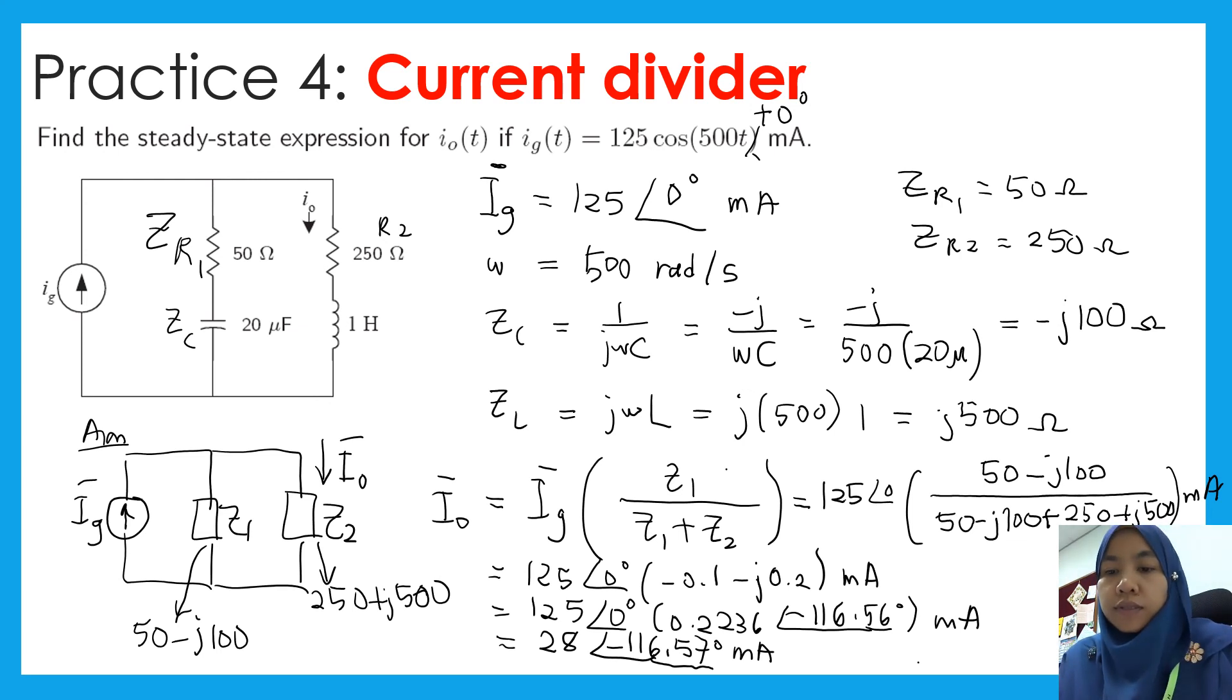And bear in mind, all the units here are in milliamps. Please use the steady state expression. So what is i node? i node should be in a small letter. And we express back to T, the function of T. And this is 28, what is the cosine? And then omega angular frequency is 500 plus negative 116.57 degrees in milliamps. Okay, thank you.